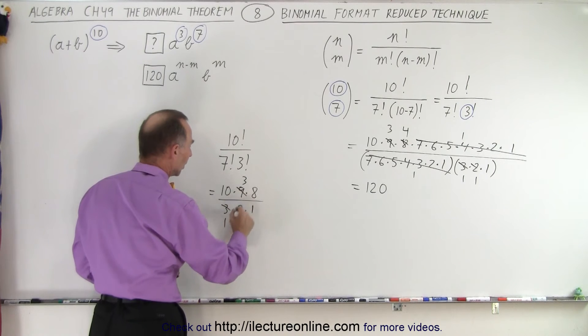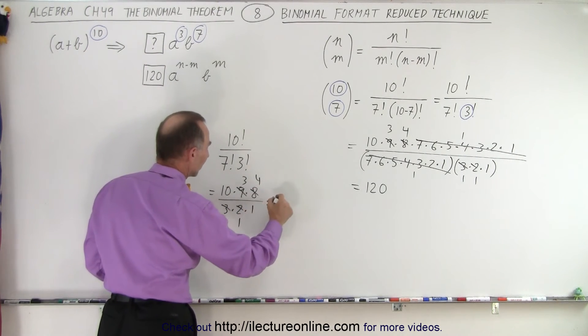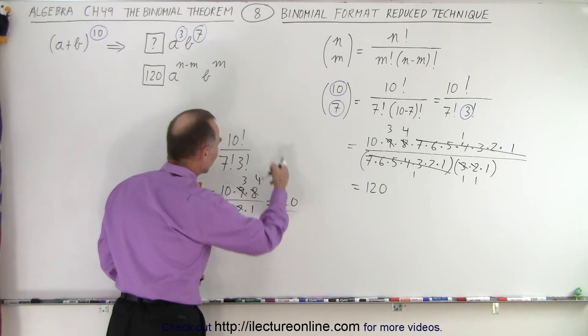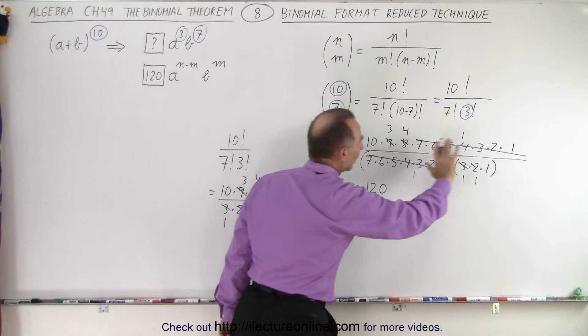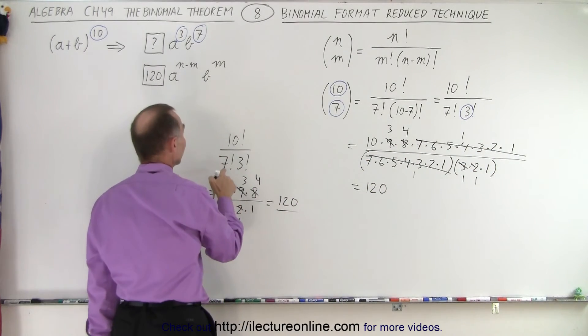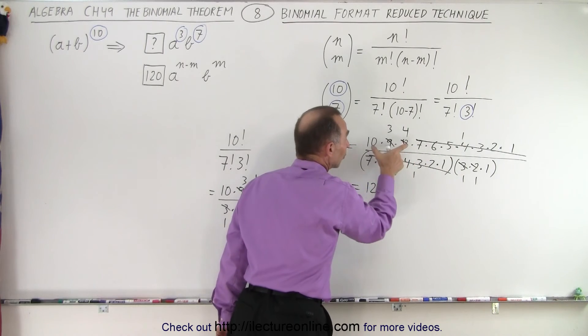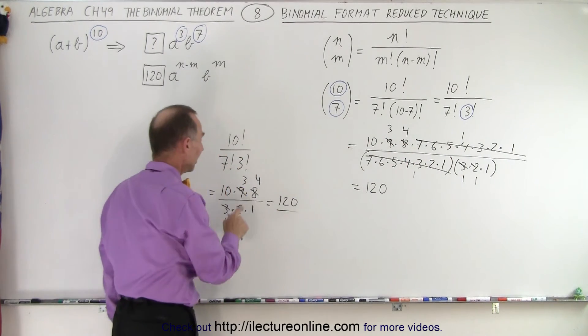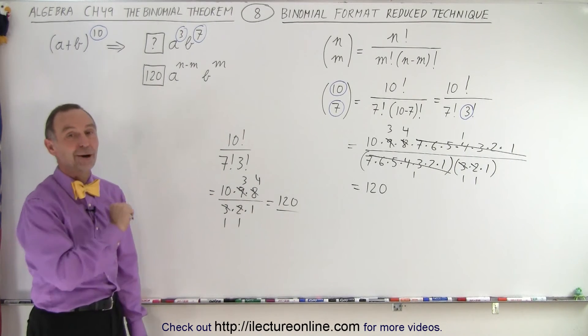And then you can simplify this. So this becomes 3 and 1, 4 and 2, and this is 1. And so this is 12 times 10 or 120. So you can see that you can do this relatively quickly without having to write all that out, simply realizing that 7 factorial is the last 7 factors of 10 factorial, which only leaves you 10, 9, and 8. And then the 3 factorial is 3 times 2 times 1. And that is how it's done.